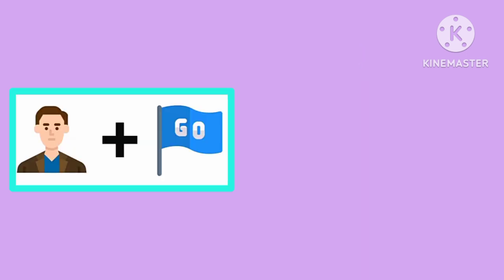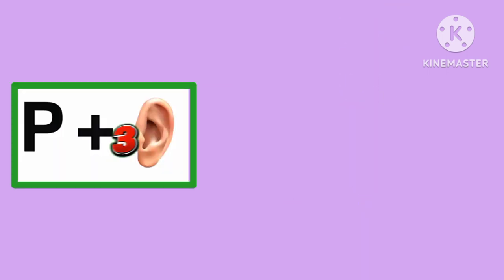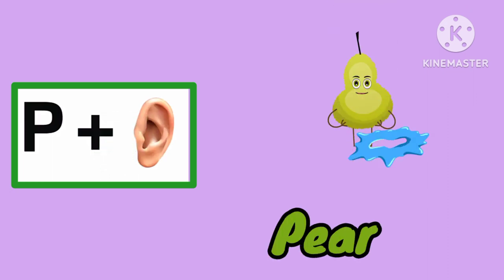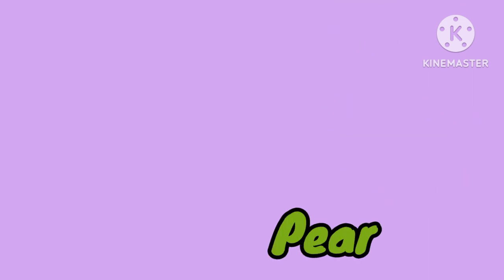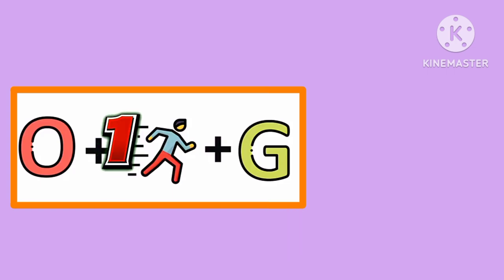Apple! Now mango. Yes! Which word starts with P? Pear! Excellent! Now this is which fruit?